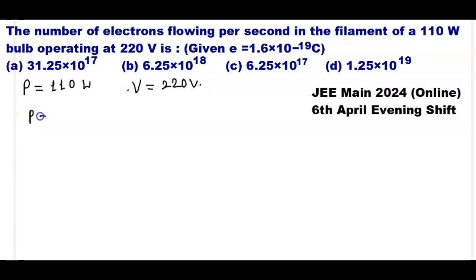We know that power P is equal to I into V. So current I is equal to power divided by voltage.